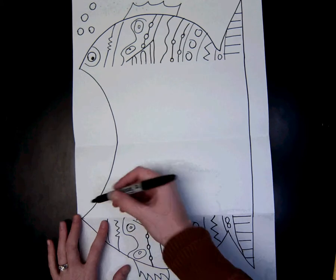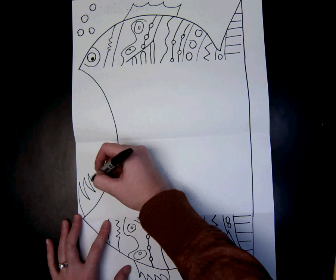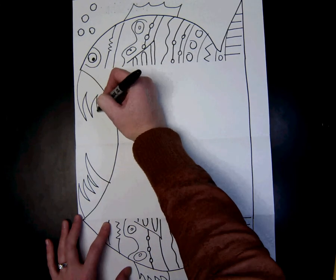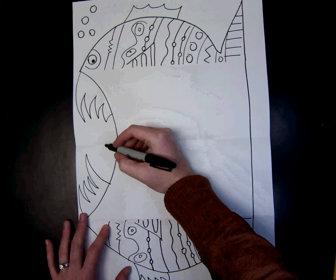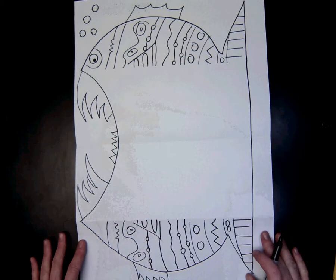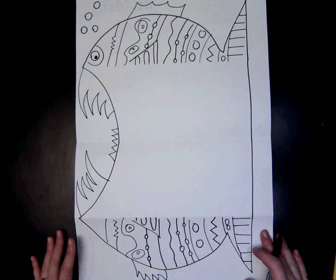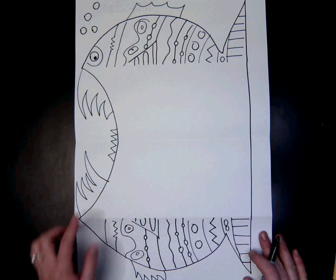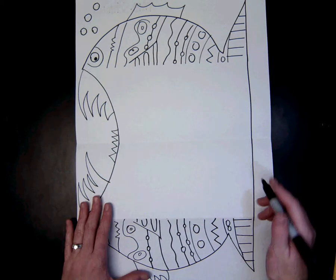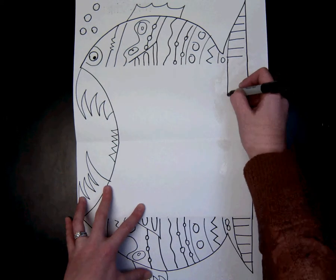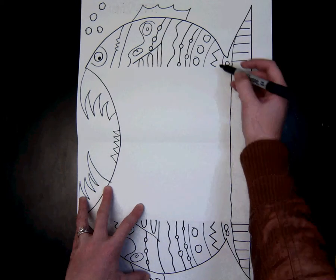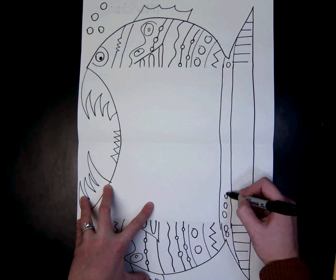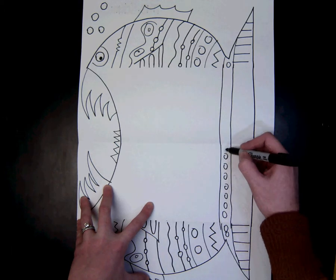Then we are going to do our nice big teeth. You can have your teeth any way you want. You can even have some coming here. Now when you are connecting your designs, you want to make sure you are going all the way to the top and to the bottom so that it looks like it is one fish from when you open it to when you close it.